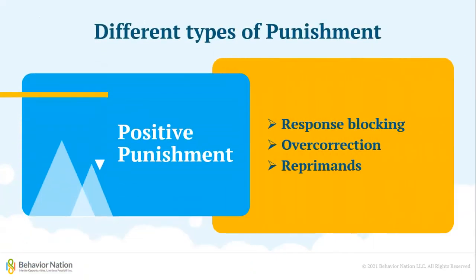Let's review different types of punishment. Positive punishment is where something aversive is added, and there are three types to consider: response blocking, overcorrection, and reprimand. Response blocking is simply blocking your child from completing the action — for example, placing your child's hands in their lap if they attempt to hit their head. Overcorrection has the child overcorrect the behavior they engaged in — for example, if your child ripped up paper at their desk, they would throw away all the pieces, clean their desk, push in their chair, and organize their materials. Finally, reprimands — simple statements like 'Stop!' or 'Don't do that!' — are also punishment procedures.